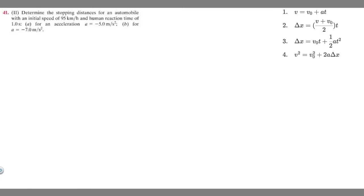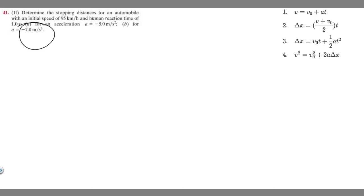In this problem we're told to determine the stopping distances for an automobile with an initial speed of 95 kilometers per hour and a human reaction time of 1 second. Part A uses an acceleration of -5 m/s² and Part B uses -7 m/s². The first thing we should do is draw a diagram to understand what's going on.